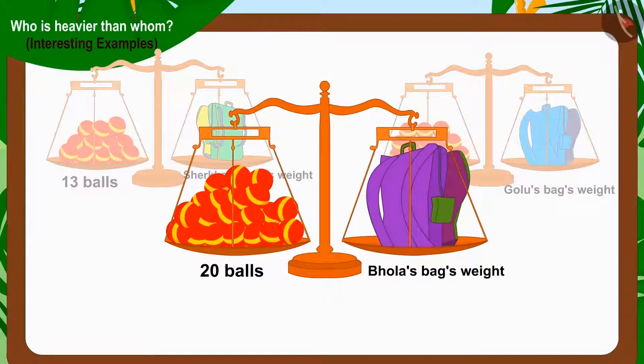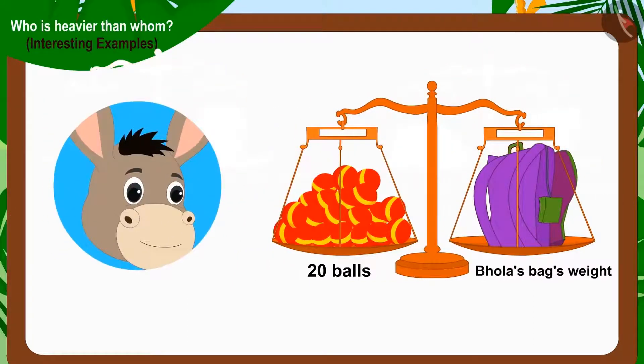Well done! Your answer is absolutely correct. Highest number of balls is twenty balls and is equal to the weight of Bhola's bag. That's why Bhola's bag is the heaviest.